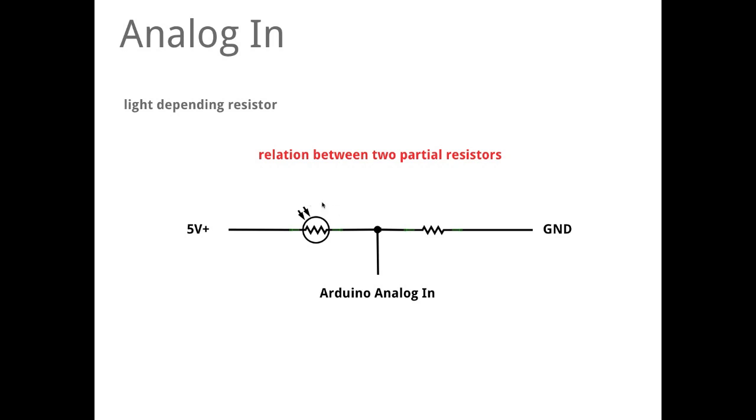Measure the difference between that resistor and that resistor, or the relation between them. LDR is the word for this light resistor - it's called light depending resistor - and the other one is the reference resistor.